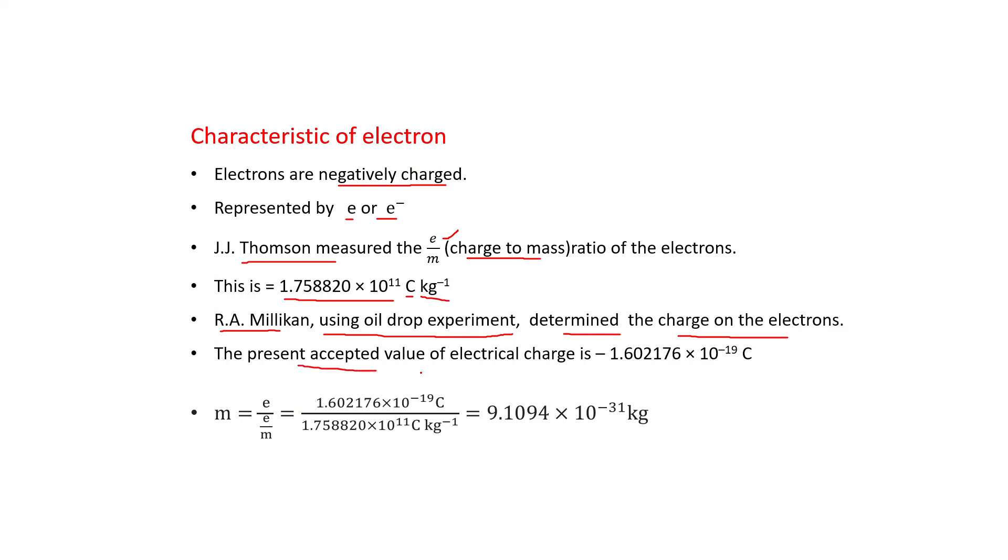The present accepted value of electrical charge is minus 1.602176 into 10 raised to the power minus 19 Coulomb. Actually, this value is the absolute value for charge and this minus because electrons are negatively charged. With the help of these two values, that is with the help of E by M and with the help of this charge, we can find out the mass of electron by using this relationship. M is equal to E divided by E by M. Put the value, use the absolute value. Don't put minus. And this is E by M. If you solve it, you will get 9.1094 into 10 raised to the power minus 31 kilogram.